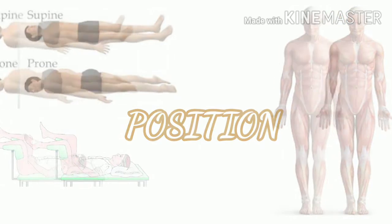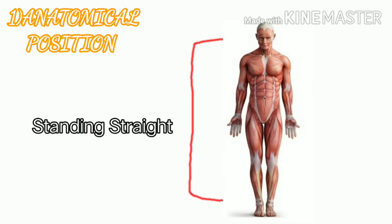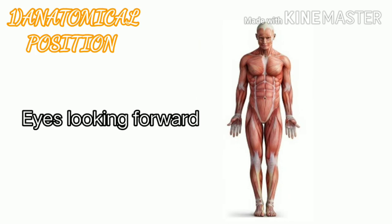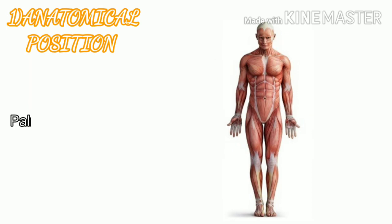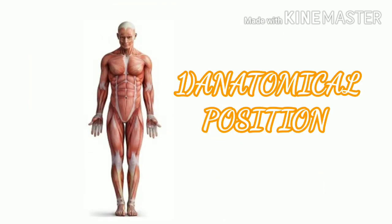For positional terminologies to make sense, a standard anatomical position has been established. The first is anatomical position: when the person is standing straight with eyes looking forward, both arms are by the side of body, palms facing forward, and both feet together.